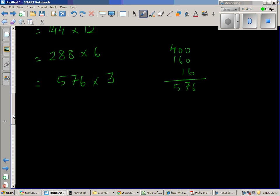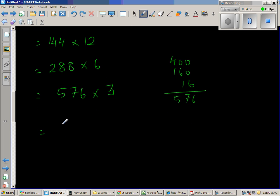So I'm going to write this as 500 times 3, which is 1500. Then you got this 7 which stands for 70. So 70 times 3 is 210. And finally 6 stands for 6. So this is 6 times 3, which is 18.